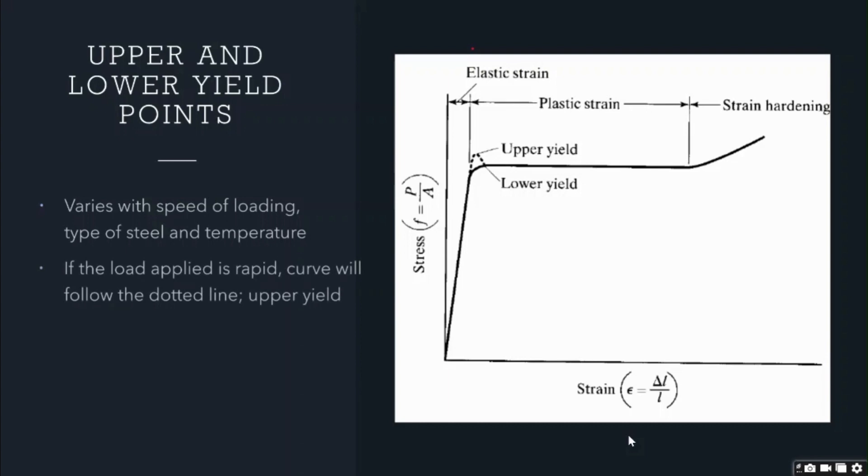If the load or stress applied on the steel is rapid, that is a high rate of loading, the curve will follow the dotted line as shown. The yield stress obtained from this type of loading is called the upper yield. Similarly, if the load is gradually applied on the steel, that is a low rate of loading, the curve will follow the solid line as shown. And the yield stress obtained from this type of loading is called the lower yield. I hope it's more clear now.